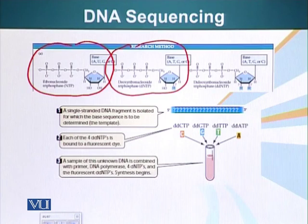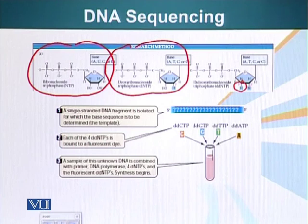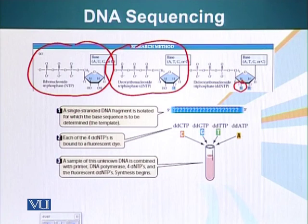As you know, the carbon atom number 3 has the 3' hydroxyl which is required for extending the DNA chain. If the 3' hydroxyl is not present, a new nucleotide cannot be added to the growing DNA fragment. So we use the di-deoxyribonucleosides in a PCR reaction for sequencing.